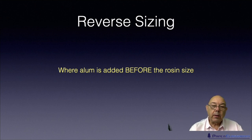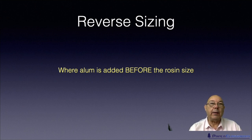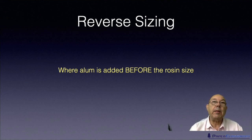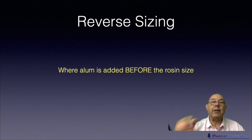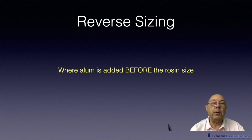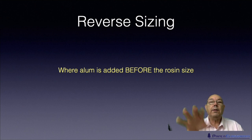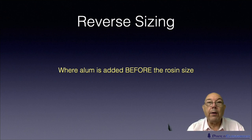So now milling around in the stock you've got aluminium ions, calcium ions, and magnesium ions. Calcium is 2+, magnesium is 2+, aluminium is 3+, so it's got more power. When the three ions fight for the rosin, the aluminium wins because it's got a bigger charge, and then you get the right sort of size — you get your aluminium rosinates, not the calcium rosinates, not the magnesium rosinates. The definition of reverse sizing is where alum is added before the rosin size.